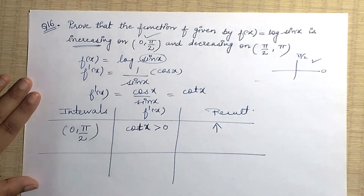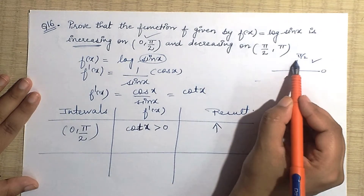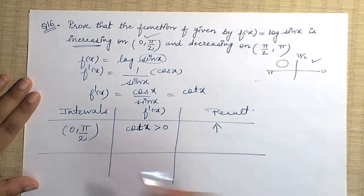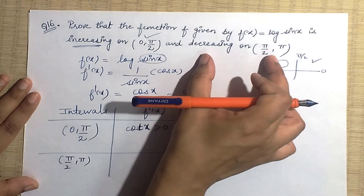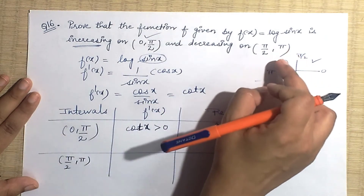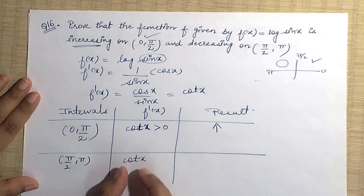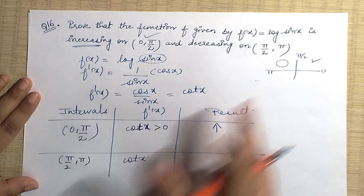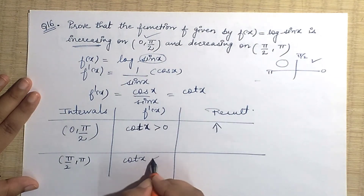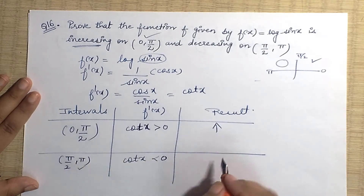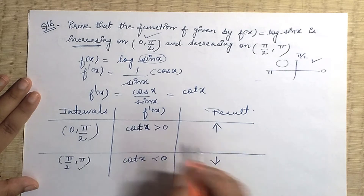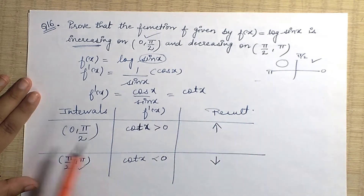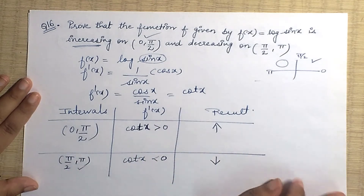Now for the second interval (π/2, π) — the second quadrant. Here the function should be decreasing. In the second quadrant, cot x is negative, so cot x is less than zero. That means the function is decreasing in this interval. This is exactly what we needed to show — increasing on (0, π/2) and decreasing on (π/2, π). Done!